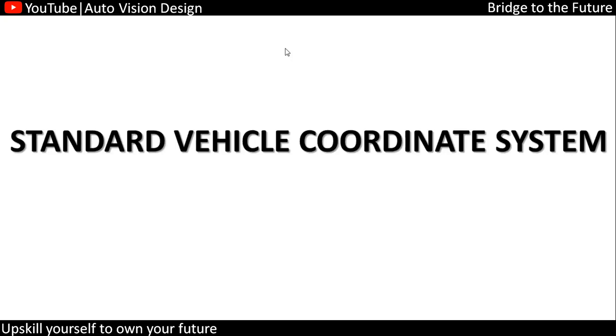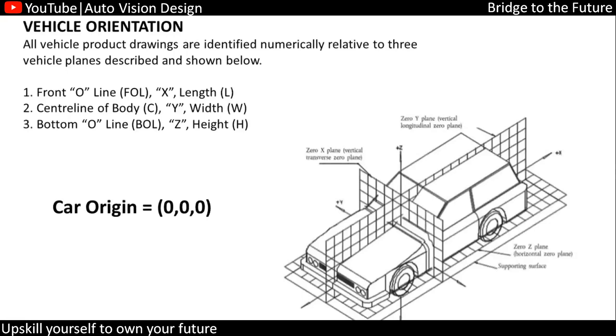Today we will check the vehicle coordinate system — where exactly the zero-zero point is going to be for the vehicle. All parts will be correlated and positioned with respect to that. Whenever we check with any OEM, they follow their own unique zero-zero condition for their vehicle.